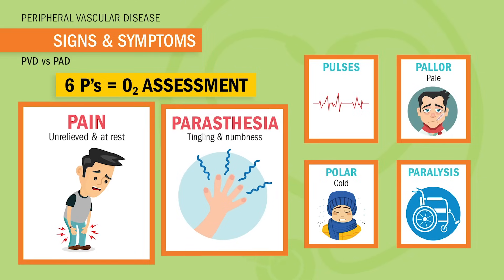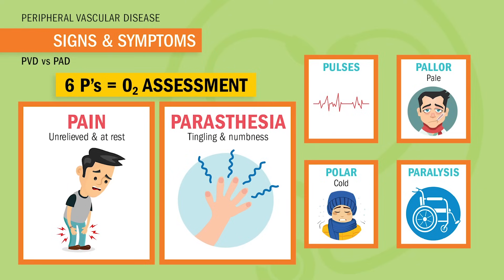And number two is paresthesia — fancy word for tingling and numbness. It's like when your leg falls asleep, but this is a way more severe version. It's like the leg is holding its breath for a long, long time — just being choked out.